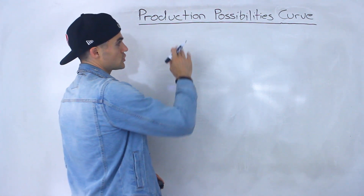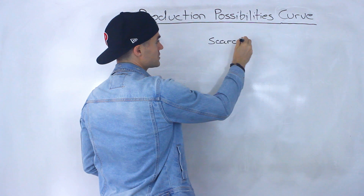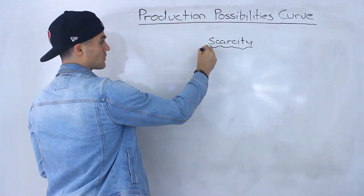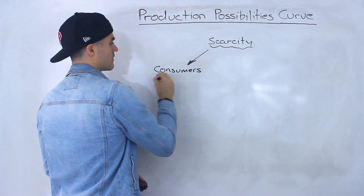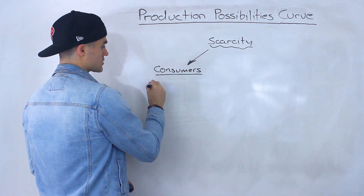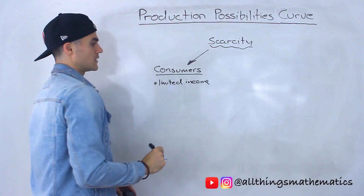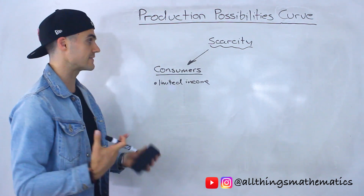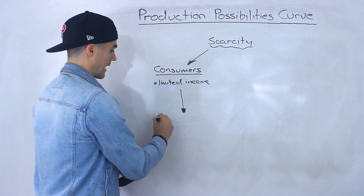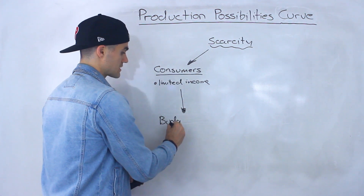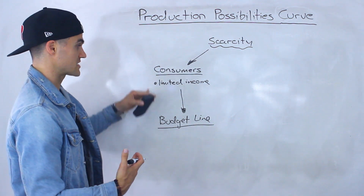To show how the production possibilities curve fits into what we're covering: we're still covering scarcity. In the last couple of videos we more specifically looked at how consumers face scarcity. Consumers face scarcity with limited income — because they only have so much income, there's only so many goods and services they can consume. We visually showed this limited income and the different trade-offs and opportunity costs through something called a budget line, which was a visual way to represent this scarcity.